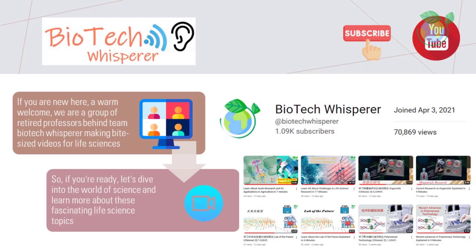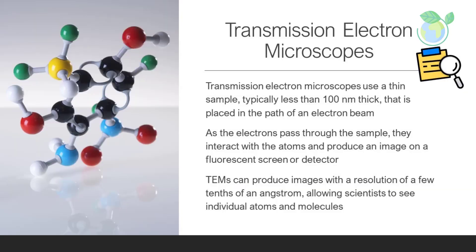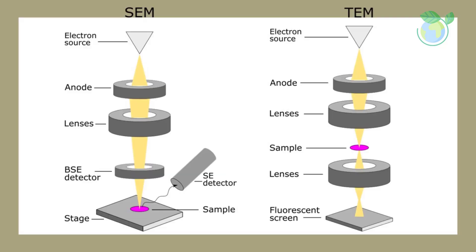Transmission electron microscopes use a thin sample, typically less than 100 nanometers thick, that is placed in the path of an electron beam. As the electrons pass through the sample, they interact with the atoms and produce an image on a fluorescent screen or detector. TEMs can produce images with a resolution of a few tenths of an angstrom, allowing scientists to see individual atoms and molecules.